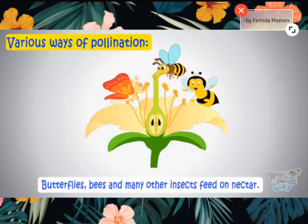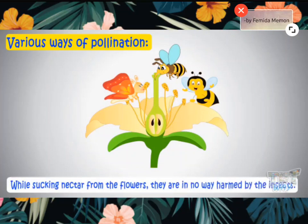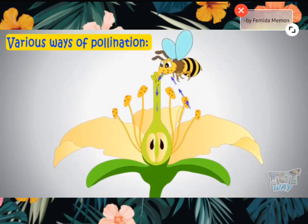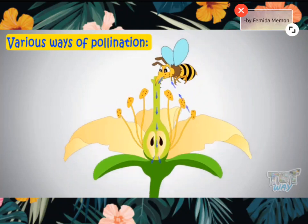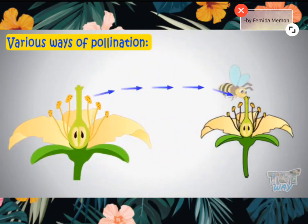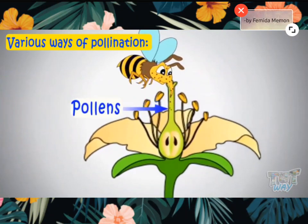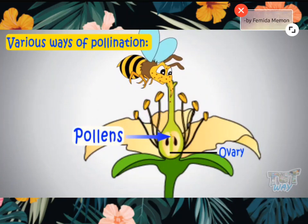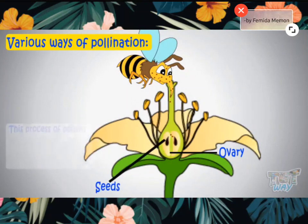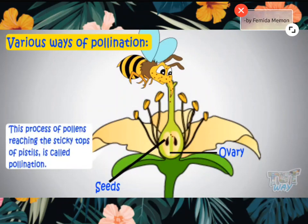Butterflies, bees, and many other insects feed on the nectar. So they visit the flower to suck nectar. While doing so, the pollens from the anther become attached to the body of the insects. And when these insects visit another flower for nectar, pollen gets to the sticky top of the pistil. By way of a long tube called the style, pollens reach the ovary where ovules are present. Fertilization occurs, leading to the formation of seeds. This process of pollens reaching the sticky tops of pistils is called pollination.